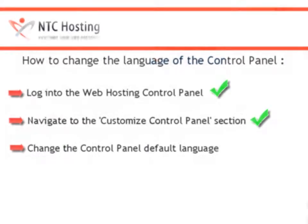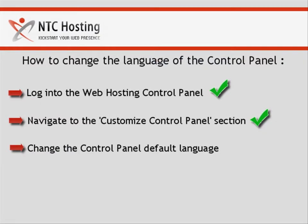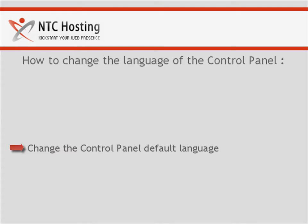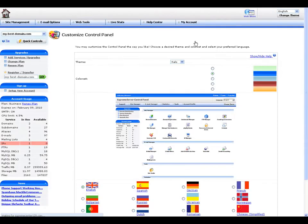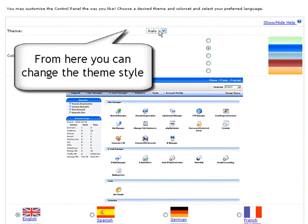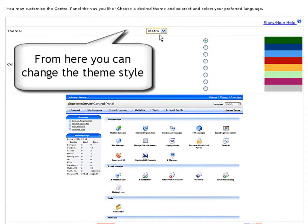We only have one step left: changing the default language of your control panel. Once in the Customize Control Panel section, you will see all currently supported control panel language options, as well as all theme styles and color scheme variations.